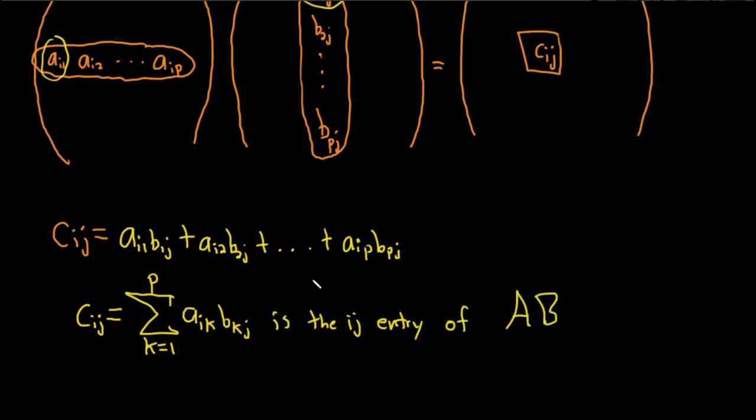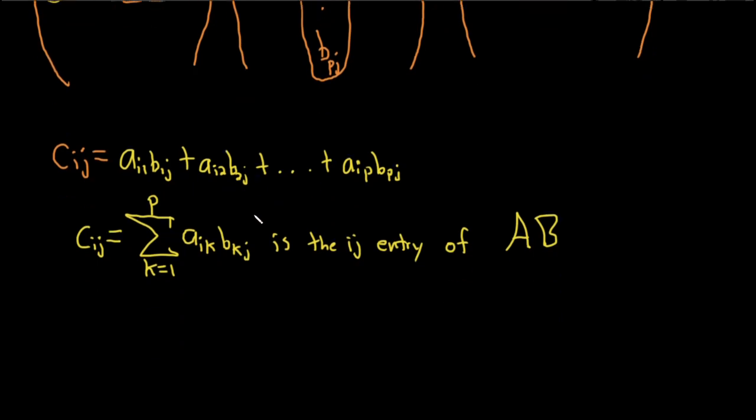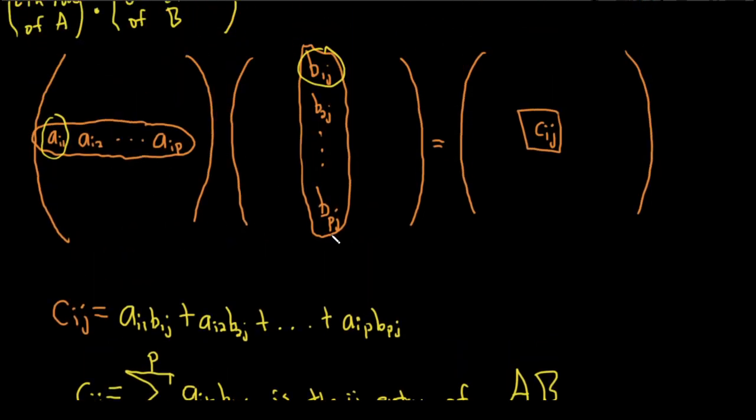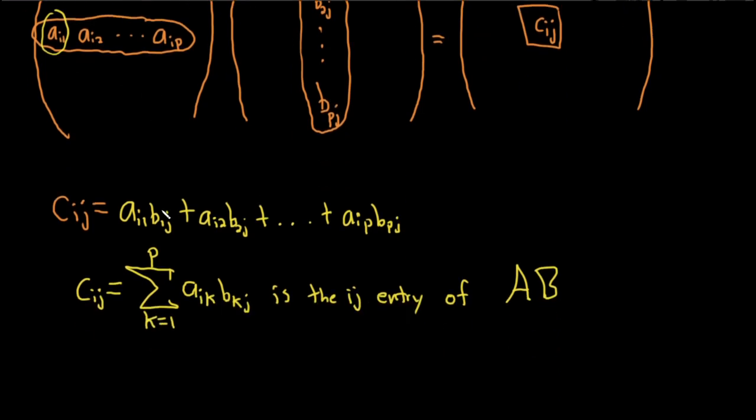So to find the IJ entry of a matrix, you take the Ith row of your first matrix and you multiply it by the Jth column of your other matrix. Row times column, row times column. When I say multiply, again, it's like a dot product of vectors, right? If you think of this as a vector, you think of this as a vector, you're basically taking a dot product.